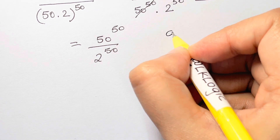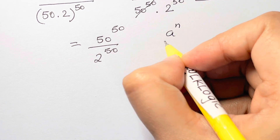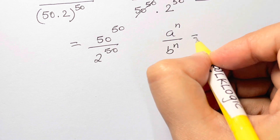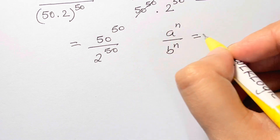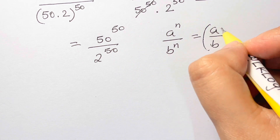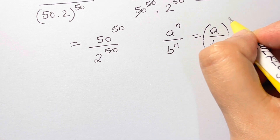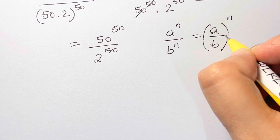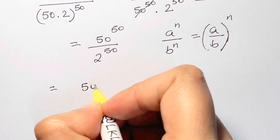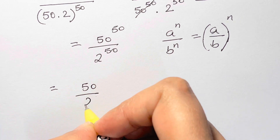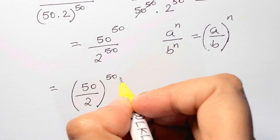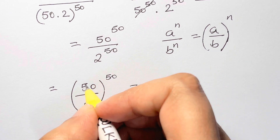So what can I do now? Here I'm going to apply: a to the power of n over b to the power of n — when you have something like this, you can just club the power as a over b, whole to the power of n. So let me write it down: 50 over 2, whole to the power of 50.